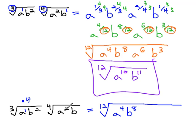Similarly, on the other radical, under the fourth root, if we want to get a twelfth root, we need to multiply the index and the exponents by three. This gives us a to the two times three, or six, and b to the one times three, which is three.